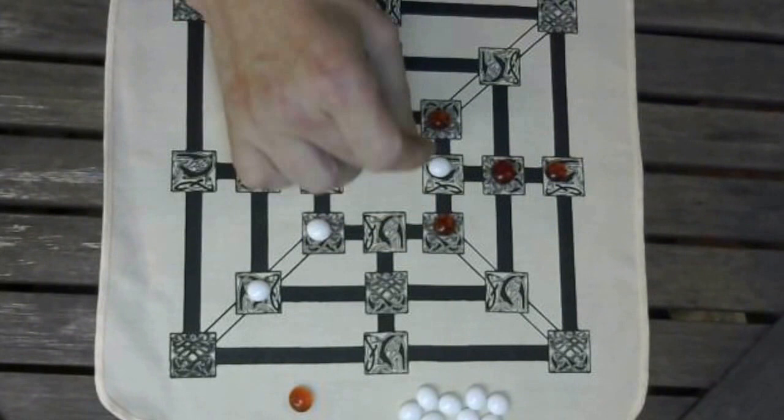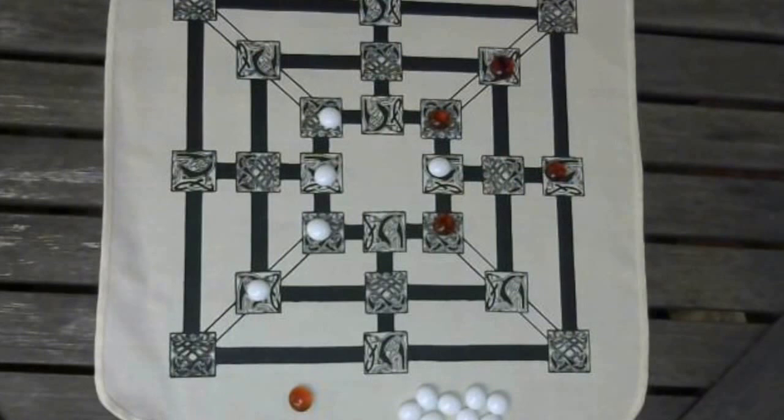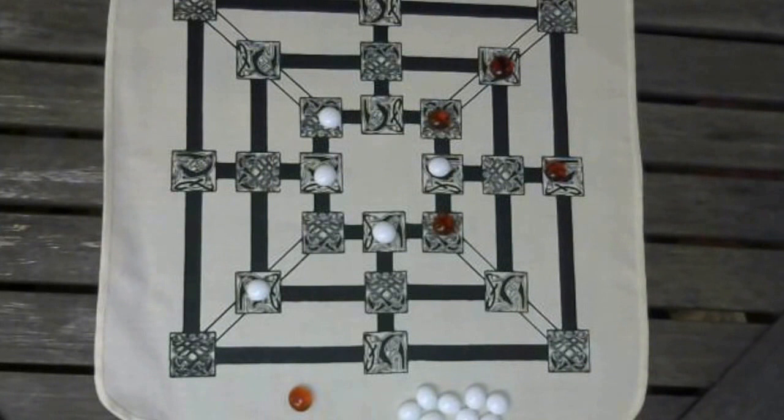Once all of the live pieces have been placed on the board, then you can start moving them, sliding them one space at a time along the lines, again trying to make three in a row so you can capture more pieces. You win by reducing your opponent down to just two pieces on the board.